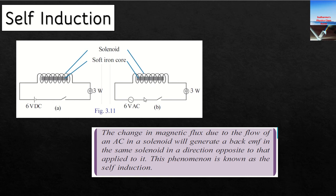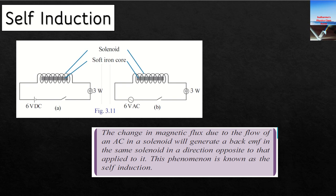In both diagrams, the only difference is the power supply — one is AC and the other is DC. In both diagrams, you can see a solenoid and a soft iron core material. In the connection with DC current, when you switch on or switch off the circuit, only at that instant there will be a change in the current flowing through the coil.